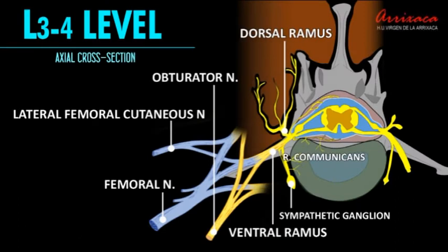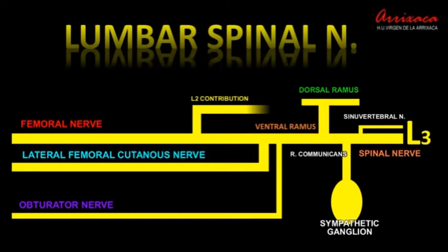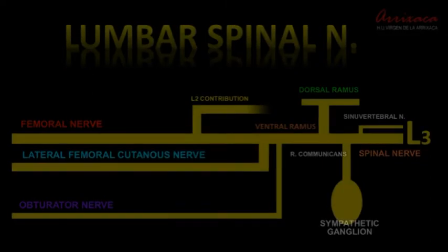Each lumbar spinal nerve branches into two different nerve bundles: the dorsal and ventral rami. The ventral rami eventually converge to form the terminal branches of the lumbar plexus. Each ventral ramus connects with the sympathetic trunk through the ramus communicans.